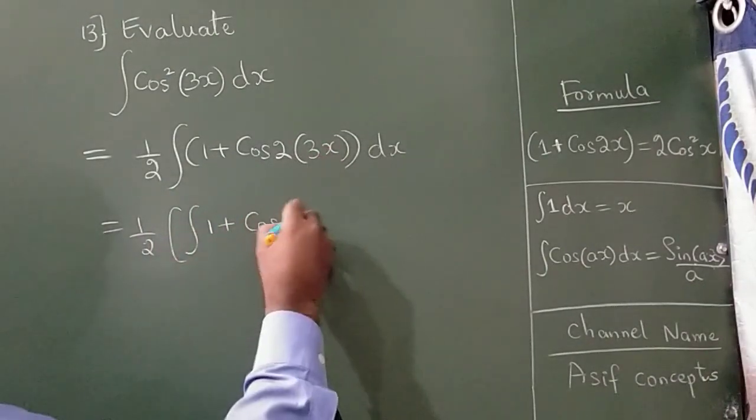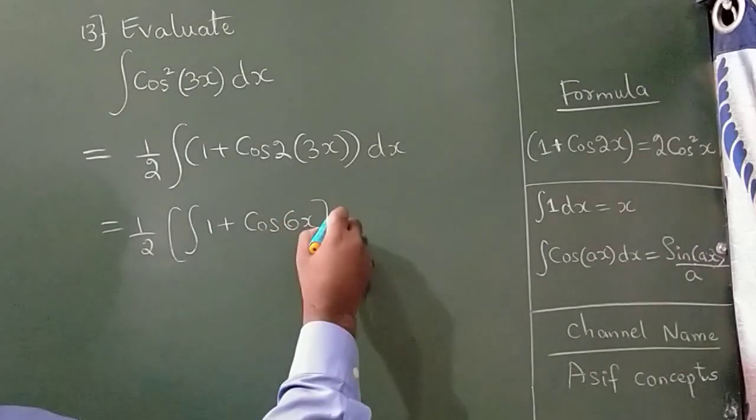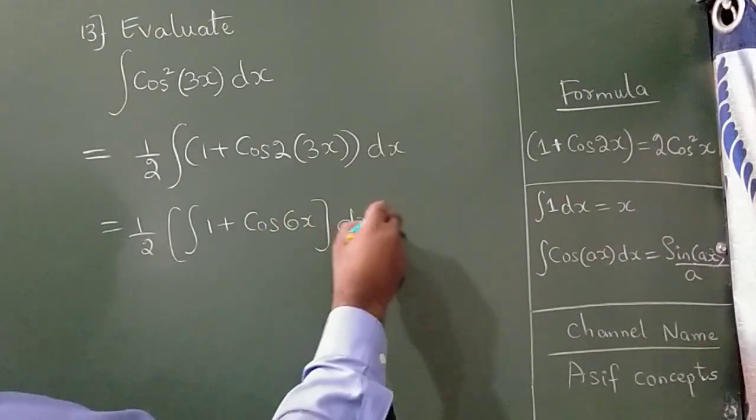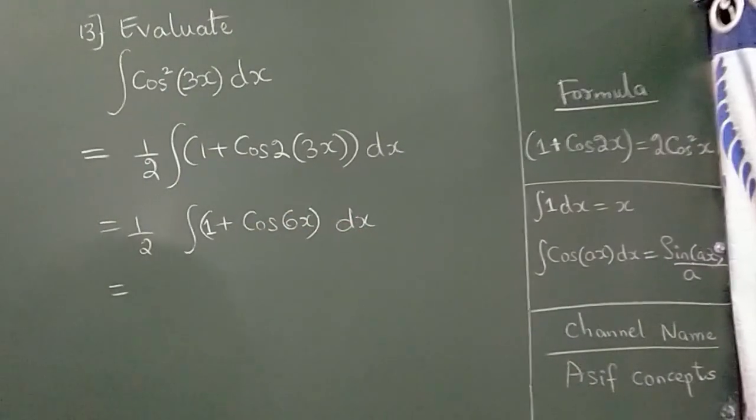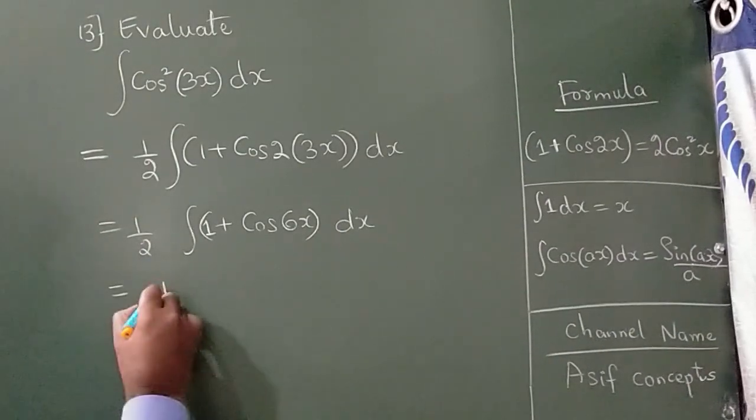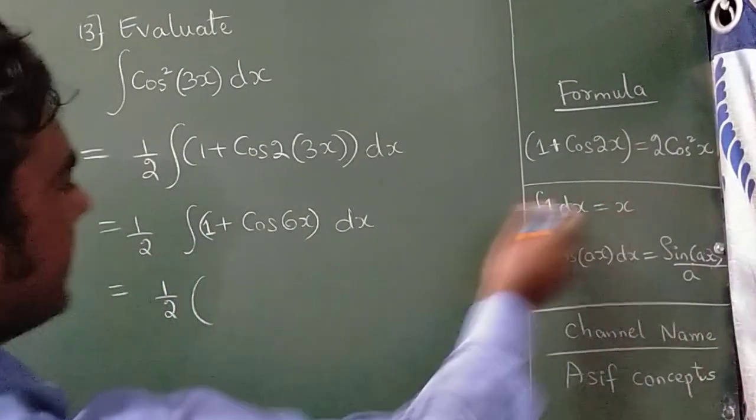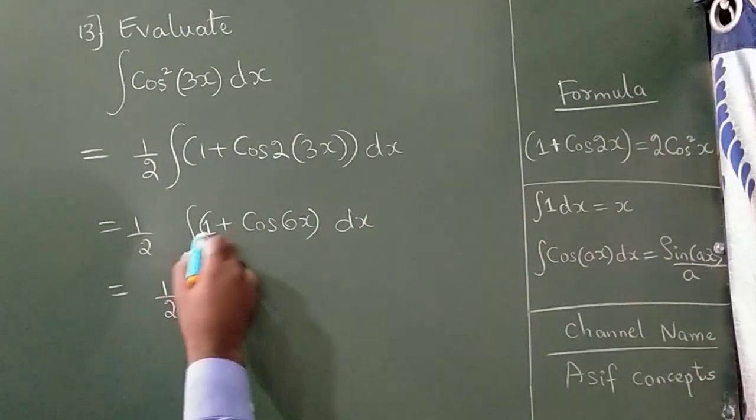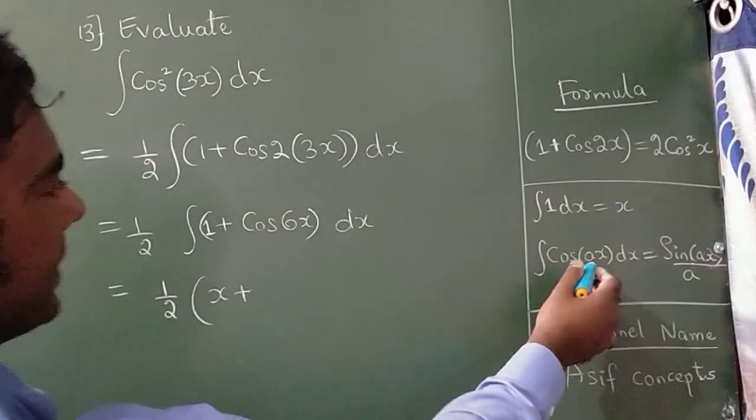cos 2 times 3x, which is cos 6x, dx. Now, the integration of 1 is x, and the integration of cos 6x from